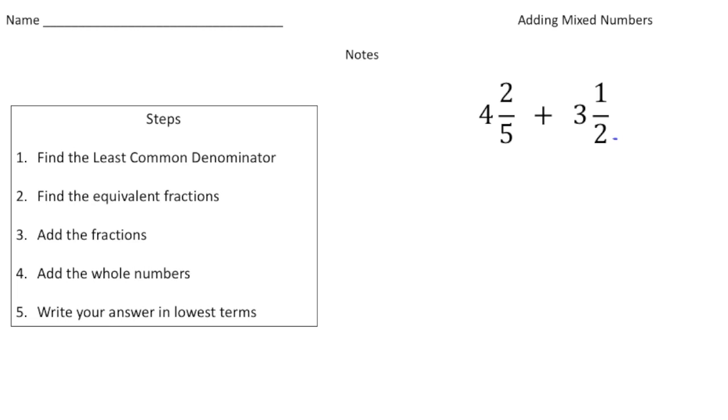Alright, so our first problem is four and two fifths plus three and a half. I've created a five step checklist on how to add mixed numbers. Step number one, and this is if needed, we need to find the least common denominator if the denominators are not the same.